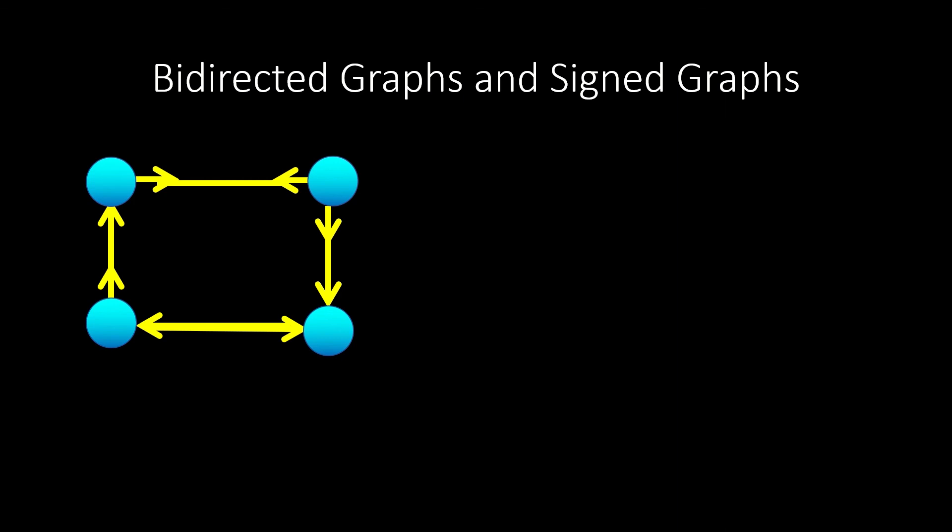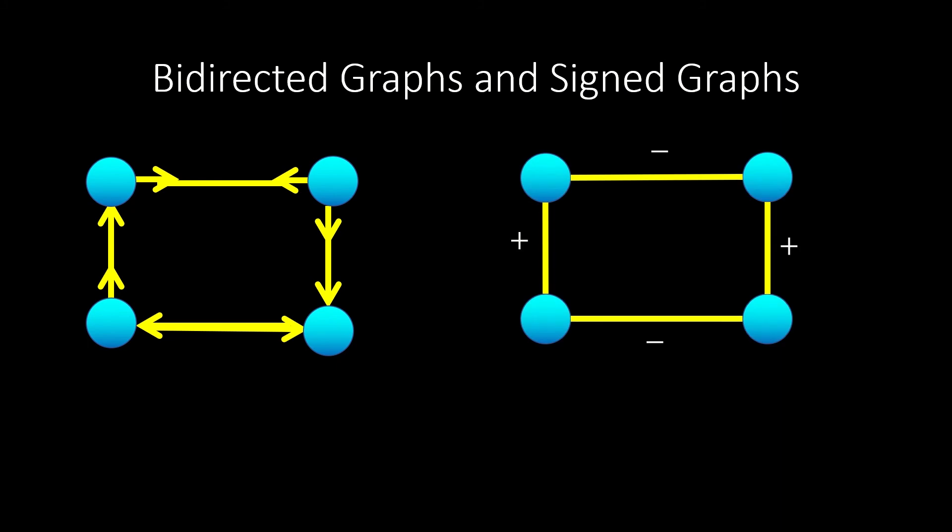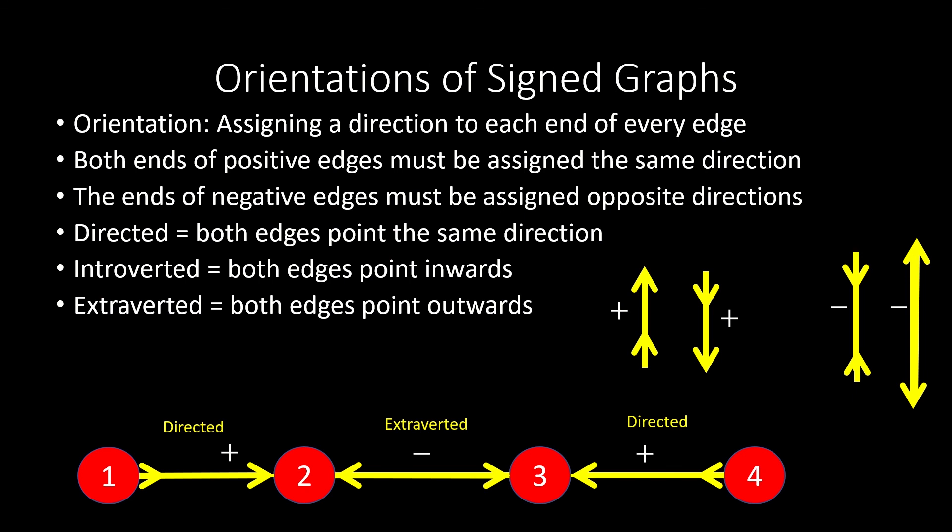As a little side note, an unsigned graph with extroverted, introverted, and directed edges is called a bi-directed graph. And with the rules we just established, we can say that each bi-directed graph has a unique underlying signed graph, obtained by assigning a negative sign to each edge that is either introverted or extroverted, and assigning a positive sign to each edge that is directed. This is interesting because it lets us apply the theory of signed graphs to bi-directed graphs. Alright, back to signed graphs.